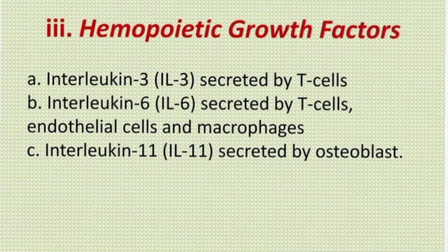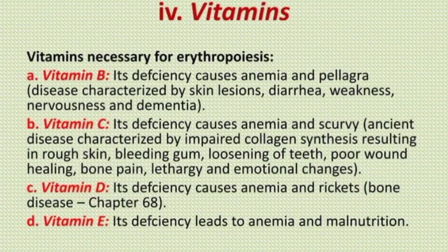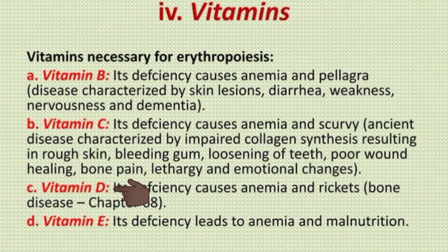Interleukins are glycoproteins that belong to the cytokine family. The interleukins involved in erythropoiesis are interleukin-3, interleukin-6, and interleukin-11. The next general factors are vitamins. Some vitamins are necessary for the process of erythropoiesis, and deficiency of these vitamins causes anemia. The vitamins necessary for erythropoiesis are vitamin B, vitamin C, vitamin D, and vitamin E.